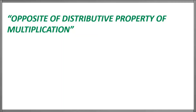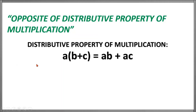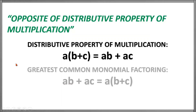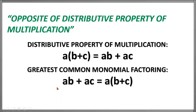Our first lesson in factoring is actually the direct opposite of the distributive property of multiplication. Recall that in the distributive property we are given a times the quantity B plus C, which results into AB plus AC. This time we will be given the product AB plus AC, and then we will express it as a times the quantity of B plus C.